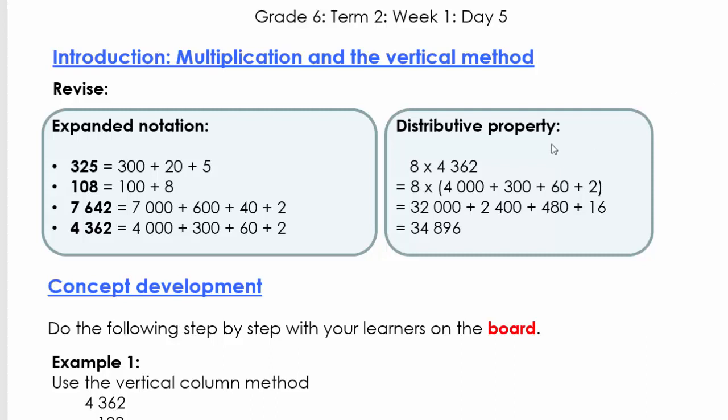Now we're going to look at the second bit of revision, and that's the distributive property where we're going to multiply 8 times 4,362. Remember, we can also write it as 4,362 times 8, but because of the commutative property, it means we can say 3 times 4 equals 4 times 3. We can write it either way around.